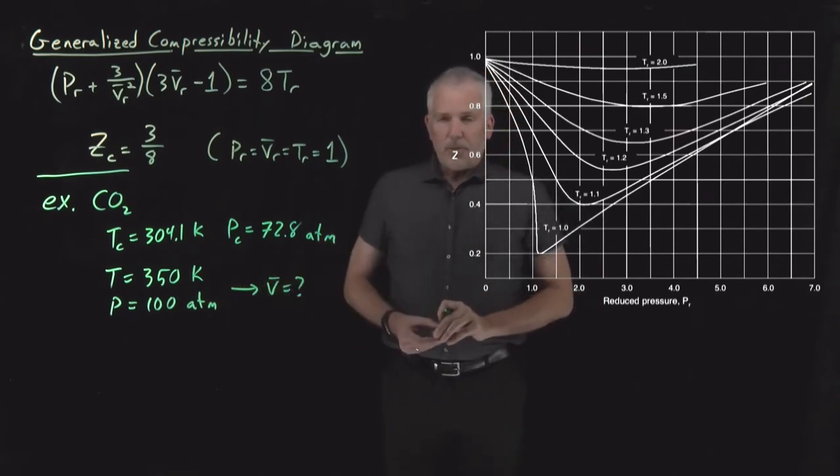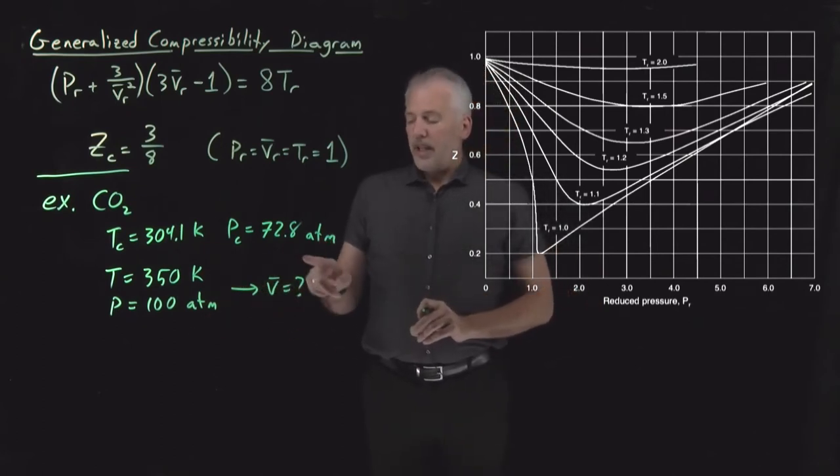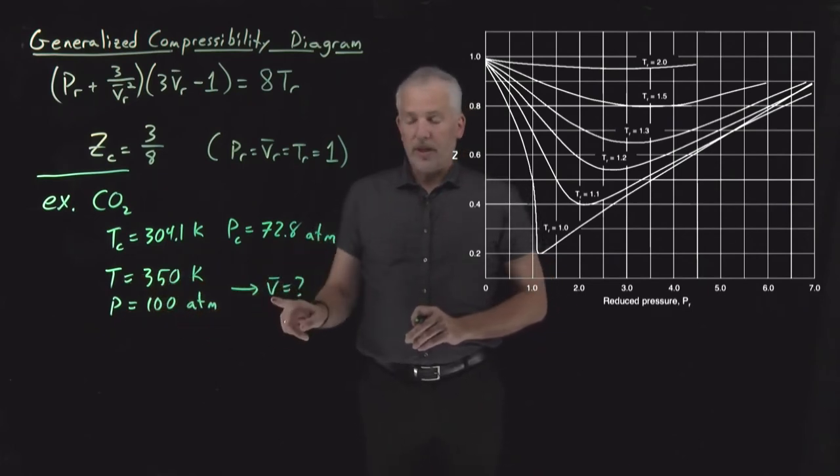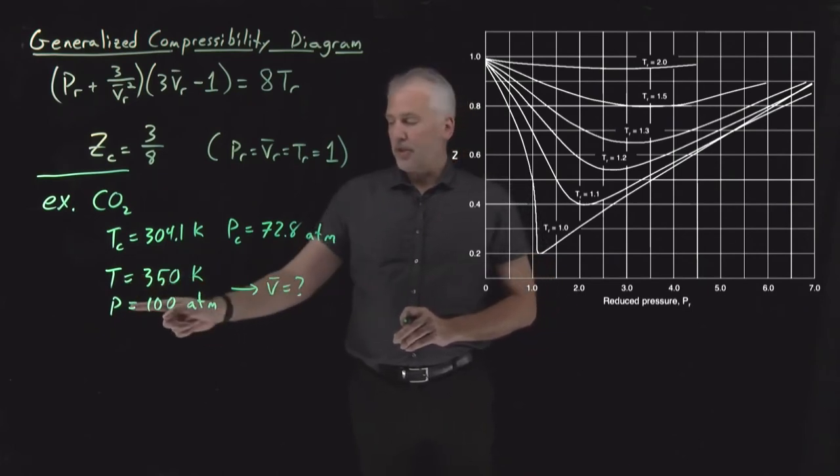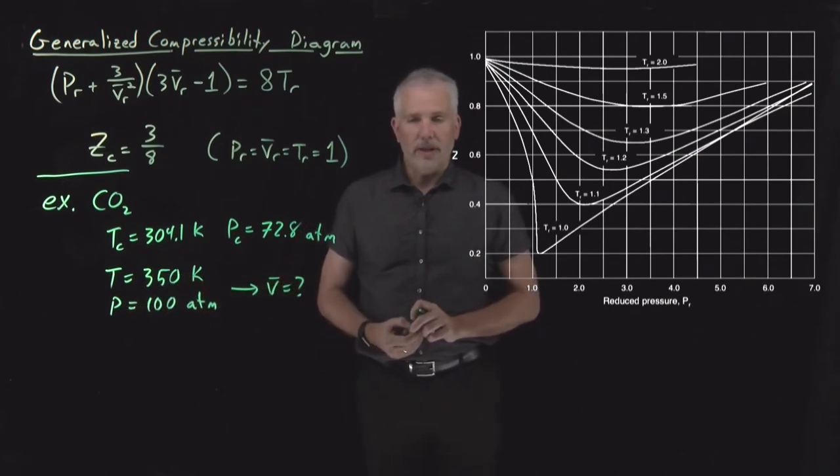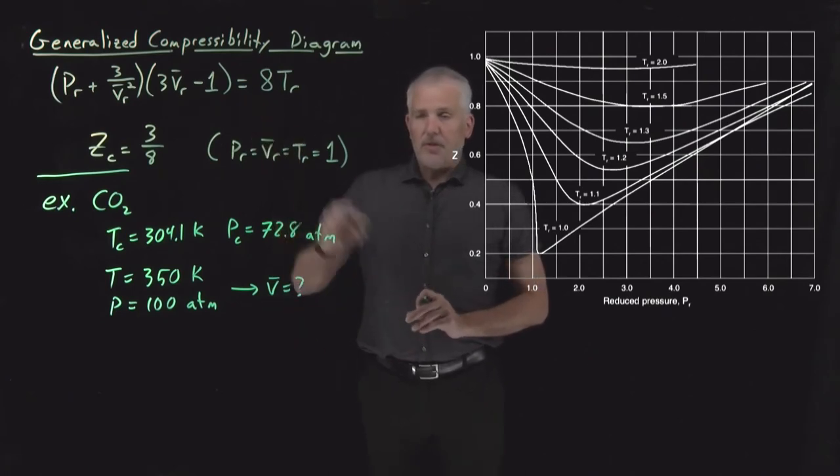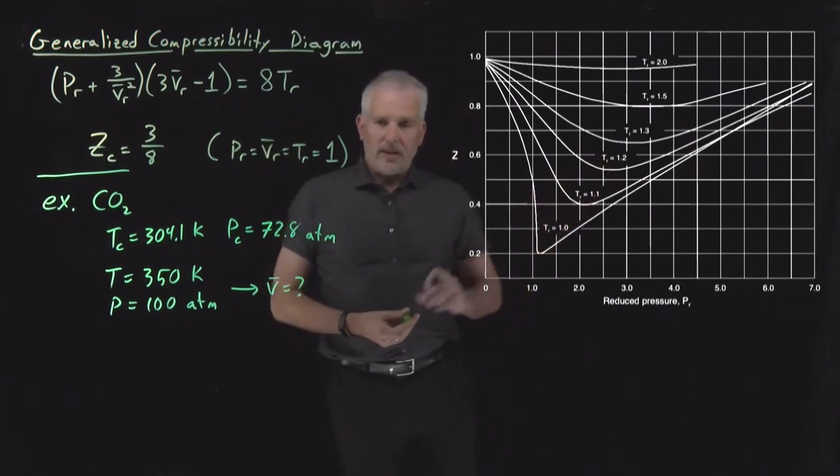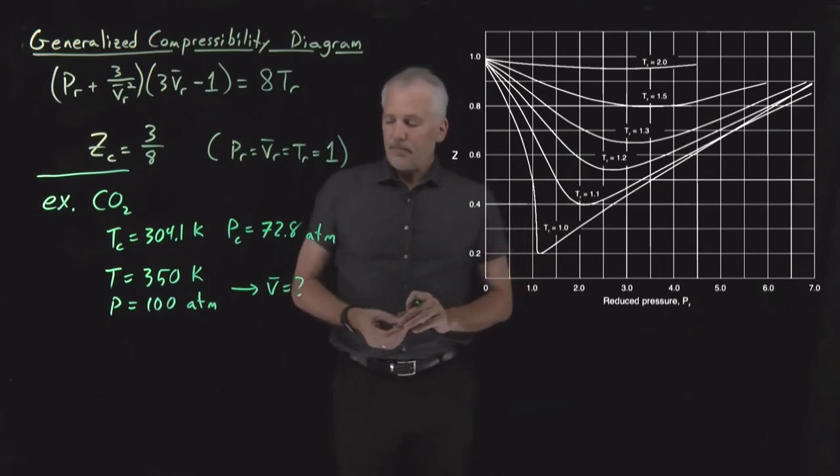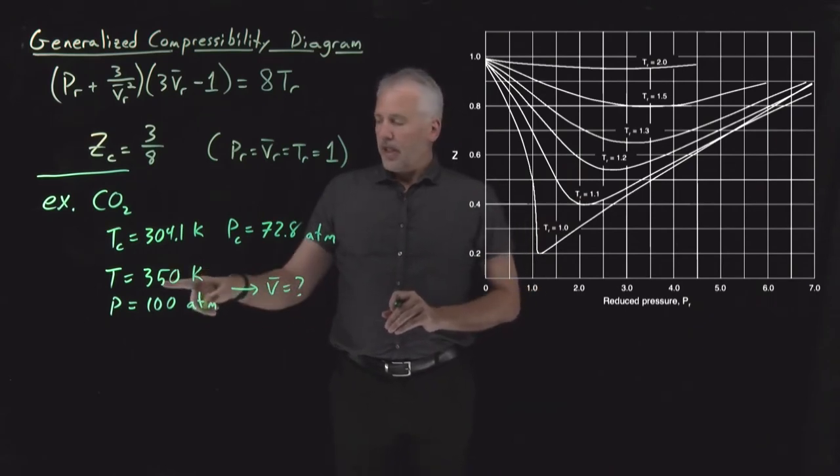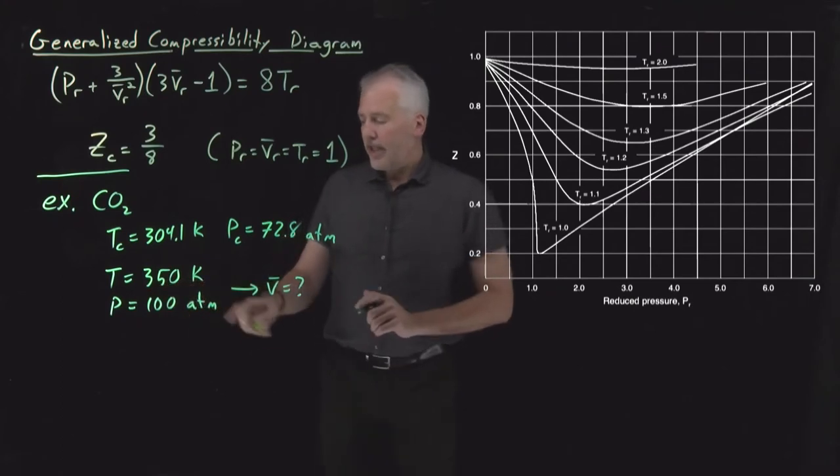Let's say I'm interested in doing something at a temperature of 350 Kelvin and a pressure of 100 atmospheres. As with any gas or supercritical fluid calculation, we can predict one thermodynamic variable in terms of two others. So I could predict the molar volume as a function of P and T. One way to go about that would be to use the van der Waals equation. We already know how to do that.